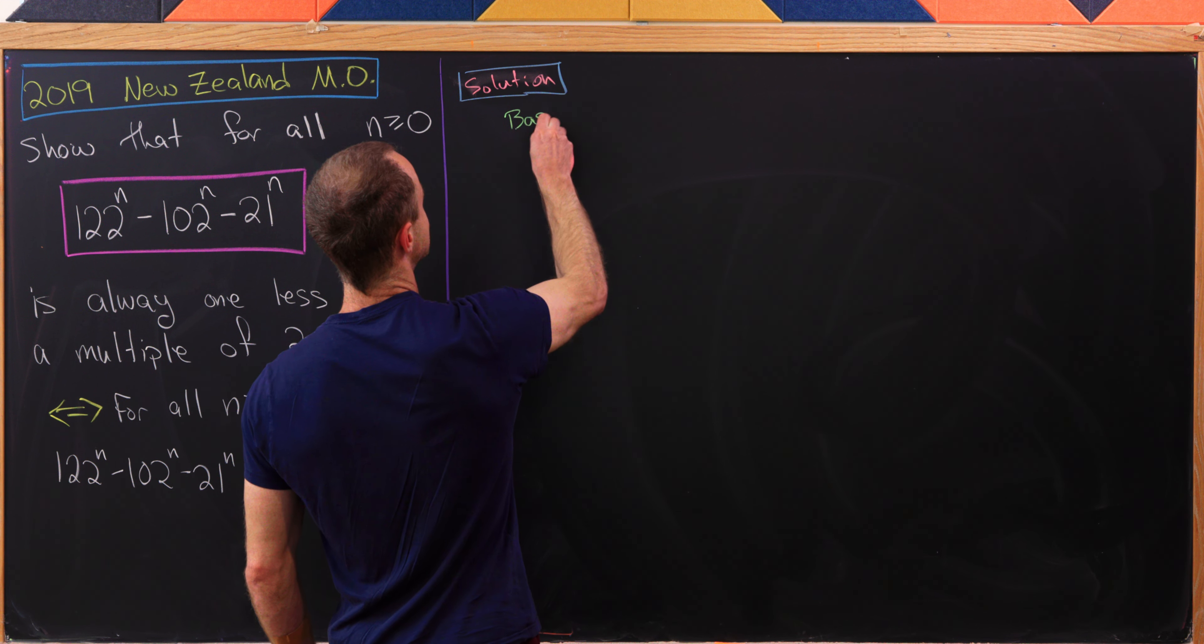So that's going to be congruent to 20 times (101 + 1)^k, plus 101 times (20 + 1)^k, and then minus 122. And this is all still mod 2020.